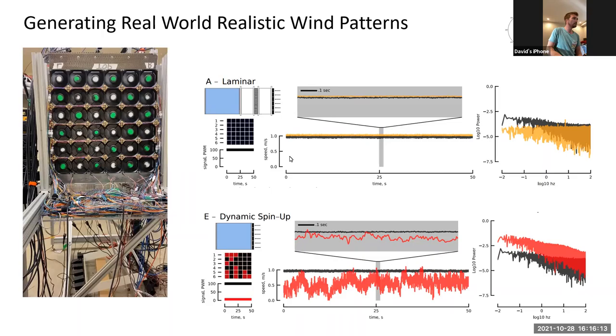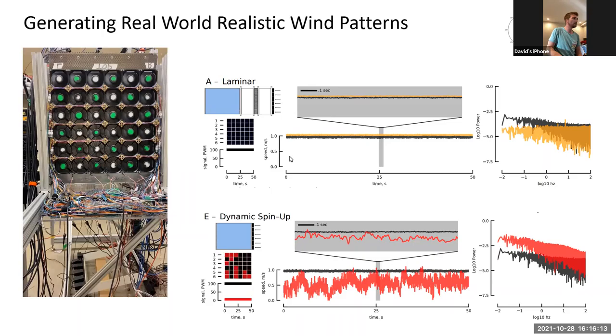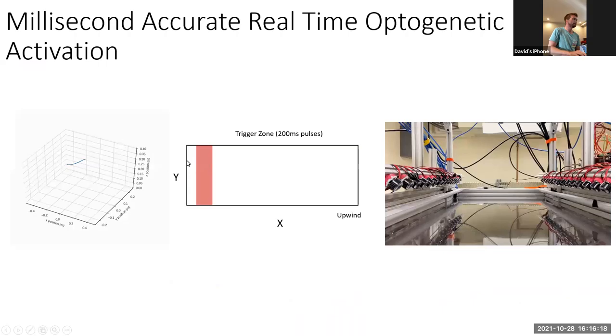But the really cool part is that we use this array of 12 cameras, we can take the feed all at once. And we use an open source machine learning platform, I'm happy to talk more shop on that if you're interested. But we can real time track the trajectory of a fly moving in this wind tunnel, which becomes extraordinarily important for if we want to really understand the specific timing of events, how the fly's motion changes with this sort of input signal. We can do that in real time on millisecond timescales, which is also important because flies are doing incredibly complex behaviors on timescales of less than a second. So we really need to be able to understand the nuance really quickly.